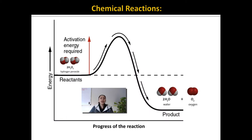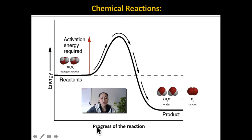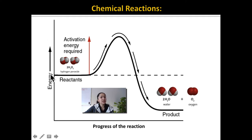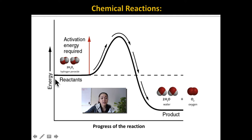How do we get a chemical reaction to occur? Let's look at this graph. On the x-axis it's showing the progress of the reaction; on the y-axis, the amount of energy in each component of this reaction. In the case of the breakdown of hydrogen peroxide, hydrogen peroxide is the reactant. You can see that the reactants have a lot more energy than the products. But there's a giant hump that has to be overcome before hydrogen peroxide can turn into a product.